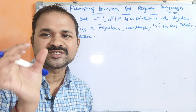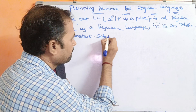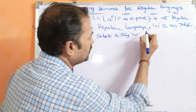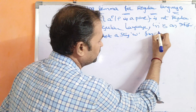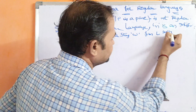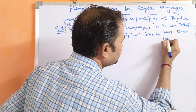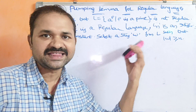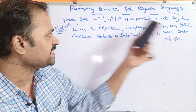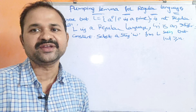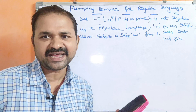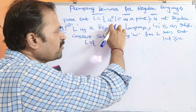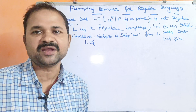We have to select a string W from the language L such that the condition mod W is greater than or equal to N. Mod means length of that string is greater than or equal to N. N is a positive integer constant. L is equal to A power P such that P is a prime number.